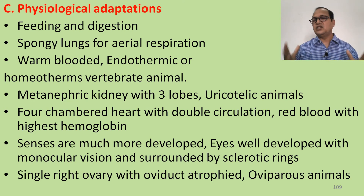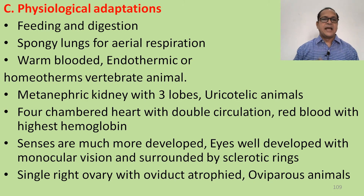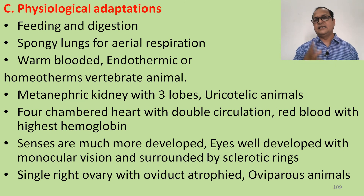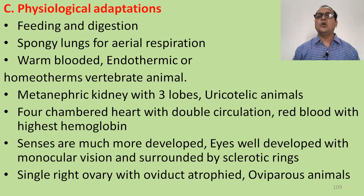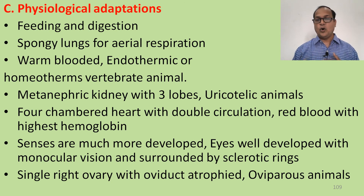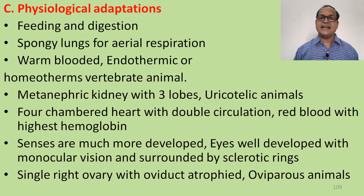Physiological adaptations: efficient feeding and digestion, spongy lungs for aerial respiration. Birds are warm-blooded, endothermic, and homeothermic vertebrates — their body temperature remains constant with respect to changing environmental temperature. They have metanephric, trilobed kidneys. They are uricotelic animals, excreting nitrogenous waste as uric acid. A four-chambered heart with two auricles and two ventricles provides double circulation. Red blood cells have a high amount of hemoglobin to carry large amounts of oxygen throughout the body. Senses are well-developed; eyes have monocular vision and are surrounded by sclerotic rings. Only a single right ovary with an oviduct is present; the left oviduct is atrophied. Birds are oviparous — they lay eggs rather than giving birth to young ones.